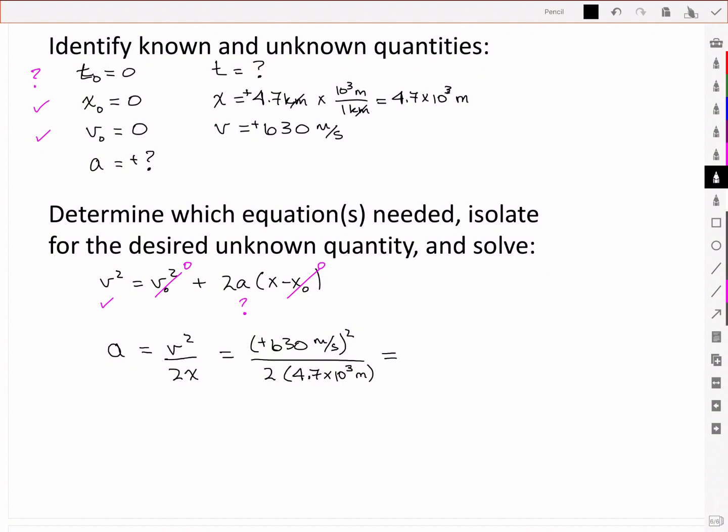And that ends up being 42. What are my units? Off to the side, I'm just going to check that I've got a meters per second that gets squared, and I'm dividing by meters. So I should end up with meters per second squared, as expected for acceleration. So the acceleration is a positive 42 meters per second squared.